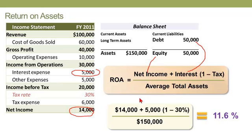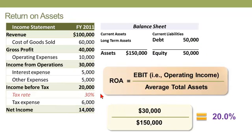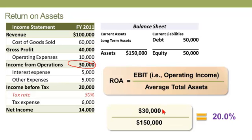That gives us total after-tax returns to all classes of financial capital. In this case, that yields 11.6% — an after-tax ROA. It's also acceptable to compute a pre-tax ROA by going directly to EBIT — earnings before interest and tax, or operating income. It's slightly impure because tax drips out of it, but it does represent a claim prior to returns to both lenders and shareholders. As a pre-tax ROA, it will of course be higher: $30,000 divided by $150,000 gives 20%.